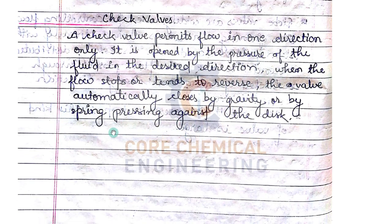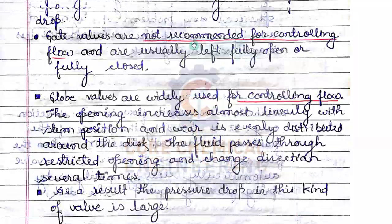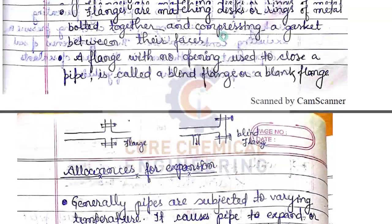A check valve — also called a non-return valve (NRV) in industry — permits flow in only one direction. It is opened by the pressure of the fluid in the desired direction; when flow stops or tends to reverse, the valve automatically closes by gravity or spring action pressing against the disk. Check valves play a very important role in safety, preventing downstream process fluid from flowing back into the system.